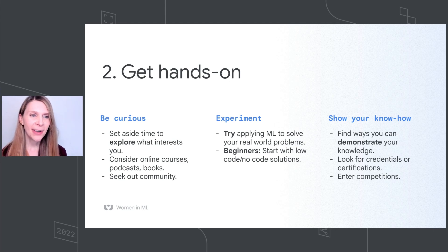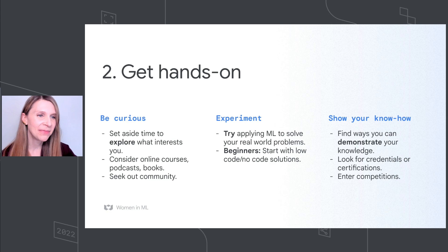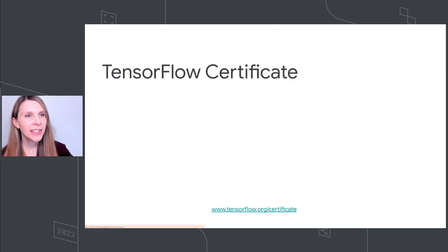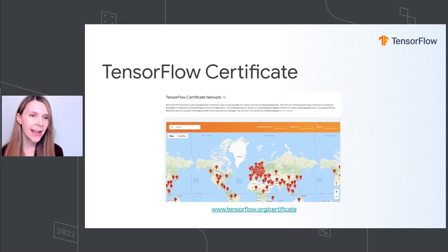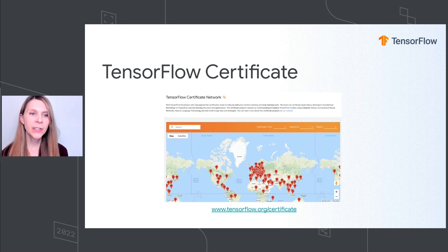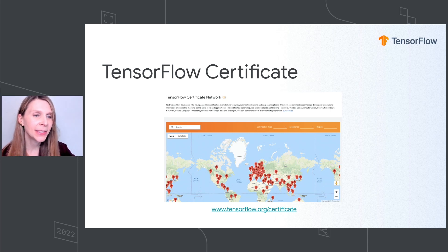The third step around getting hands-on is you can also demonstrate your knowledge through things like credentials, certifications, or competitions. The first example is the TensorFlow certificate — a great way to show your know-how. There are more than 8,000 certified professionals today. What's really cool is a lot of employers also use this to find talent, so it allows you to demonstrate that knowledge and puts you into a really cool network of individuals who are passionate and have skills in this area.